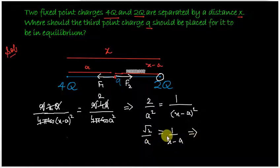On cross multiplication, √2·x minus √2·a equals a.